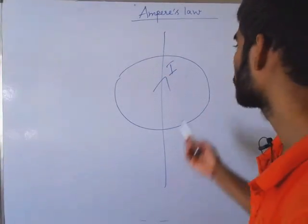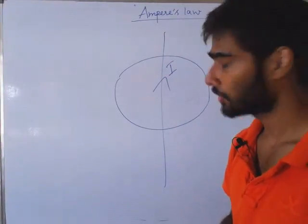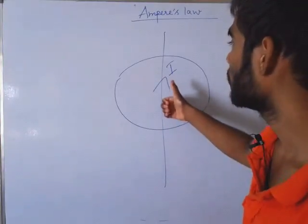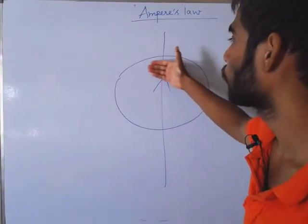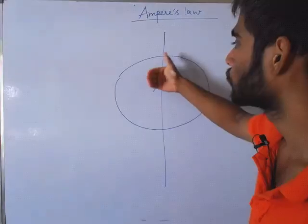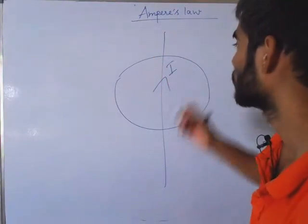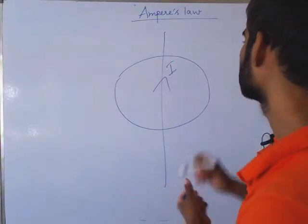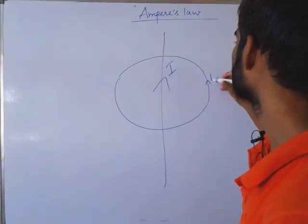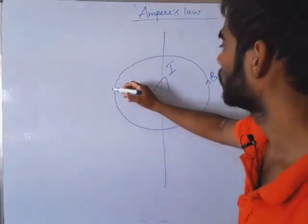Now we are required to find out the direction of this magnetic field. Take your thumb, point in the direction of current. Now wrap your four fingers like this. These four fingers will give you the direction of magnetic field, which is this direction B.